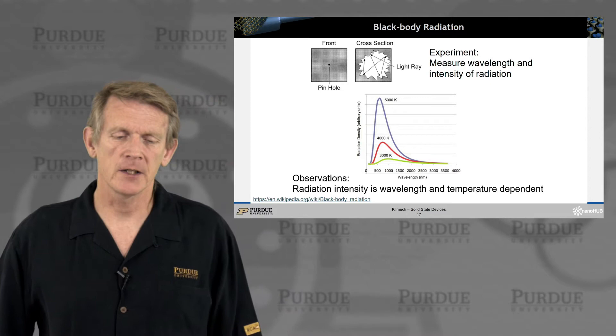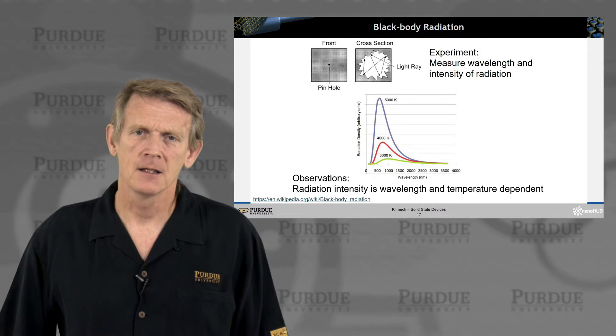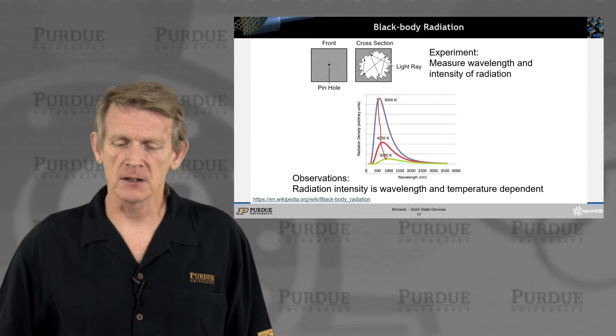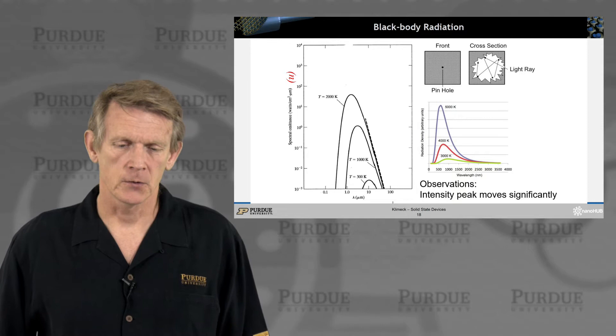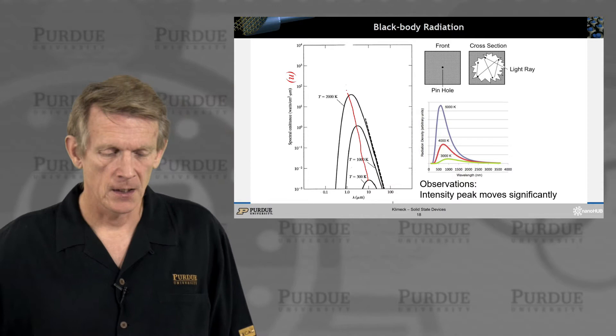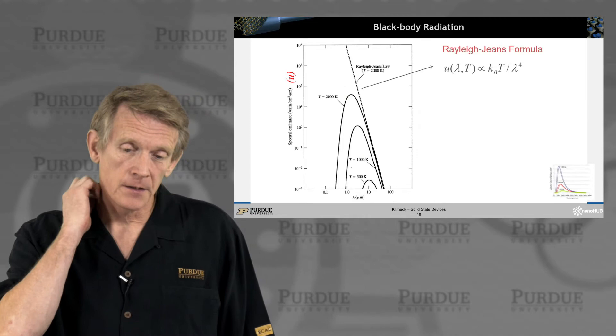And what had been observed is that the radiation intensity is temperature dependent. And what's interesting is that the peak of these curves is actually moving and is not constant. And there were a variety of theories that were created to understand it. And here the graph that is on a linear scale is now put on a logarithmic scale. And you can see more clearly how this peak moves as a function of wavelength.